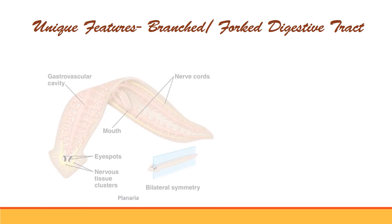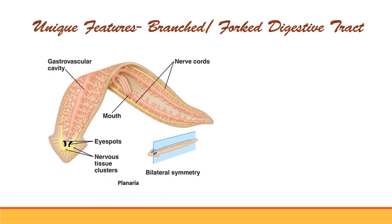The first feature is that these organisms have a branched or forked digestive tract. It will be crystal clear with the help of this diagram. Here we have shown the diagram of planaria and this is its branched intestine. The branches of intestine form a fork-like structure.